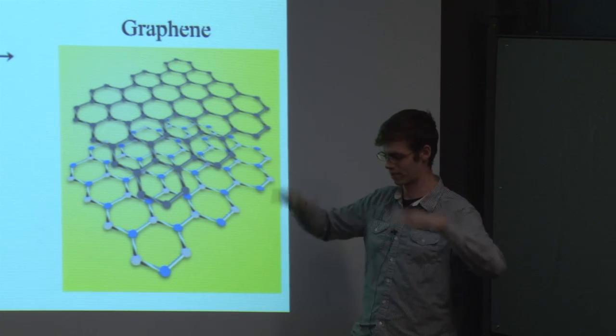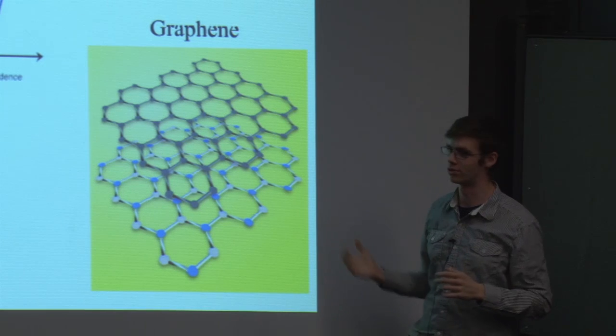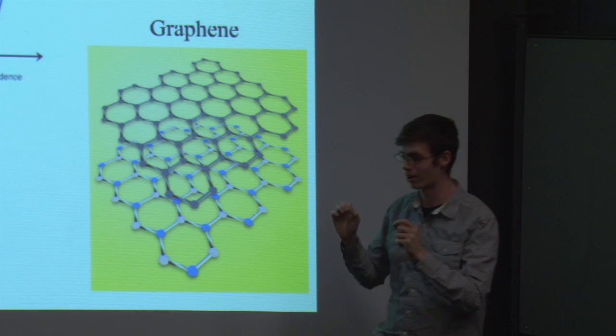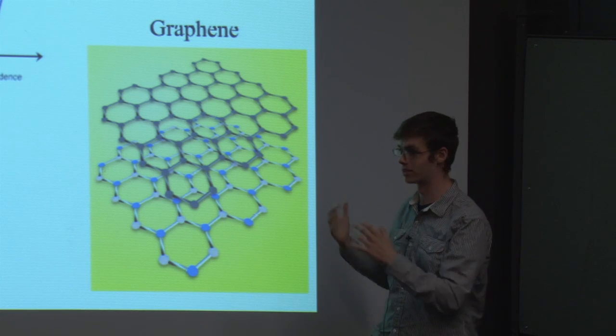So you put this flat graphene surface on and instantly, almost a hundredfold, it's able to detect things that are incredibly sensitive, things that would otherwise slip through the cracks.